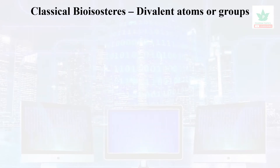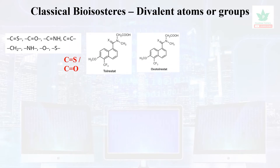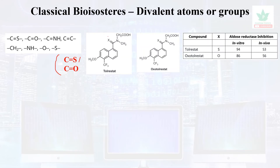For divalent atoms or groups used as bioisosteres — such as C=S, C=O, C=NH, or C=C — here is an example of C=S and C=O. When the group is C=O, in vivo activity increases, whereas when it is C=S, in vitro activity increases. This is one of the classical examples of divalent bioisosterism.